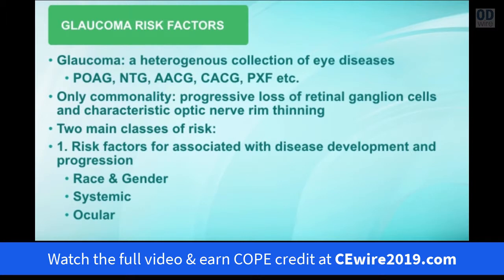If you think about it, there really are two main risks when we talk about glaucoma. Number one, and what we're going to discuss predominantly today, are the risk factors associated with the development and progression of glaucoma — such as race and gender, systemic risk factors such as diabetes or high blood pressure, and ocular risk factors such as intraocular pressure.